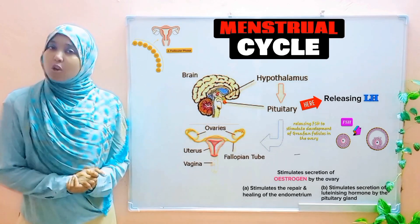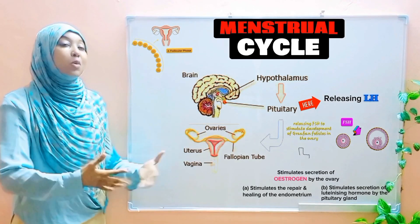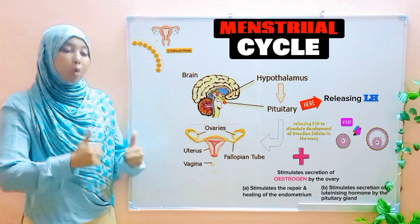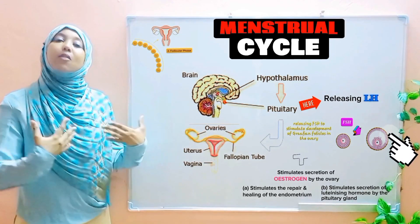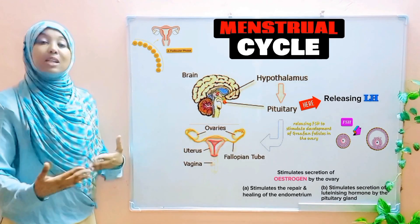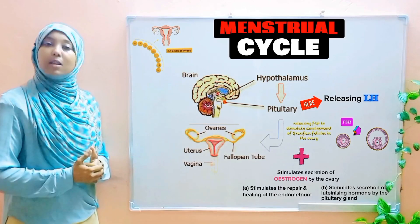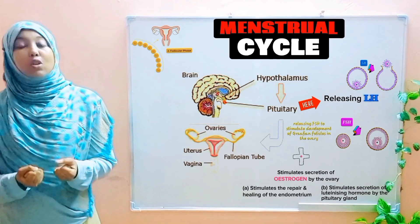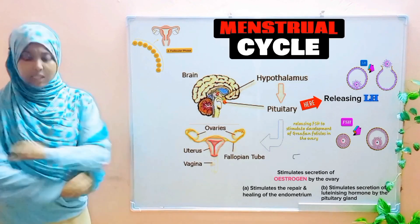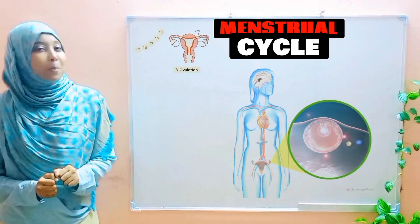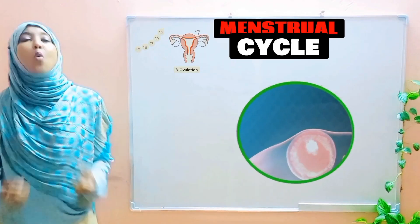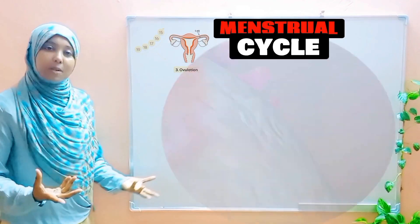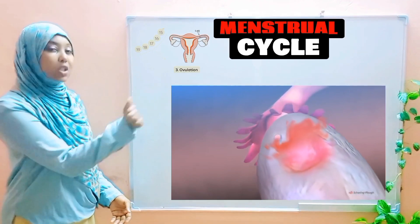The luteinizing hormone takes up where FSH stopped. FSH stimulated the development of the graafian follicles; luteinizing hormone takes it further by stimulating their maturation. Once mature, the graafian follicles burst open and release the egg cell. This is what is termed ovulation — we are now in the third phase.